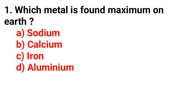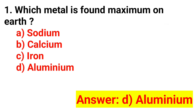Question 1. Which metal is found maximum on earth? Option A: Sodium. Option B: Calcium. Option C: Iron. Option D: Aluminium. The correct answer is Option D, Aluminium.